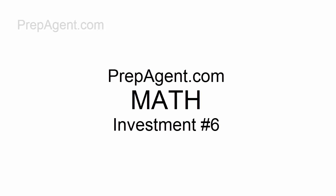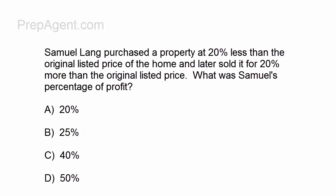Hello again everybody, this is Art at prepagent.com. We're going to continue with more math — everyone's favorite subject. This time we have a sixth investment question for you to solve: Samuel Lang purchased a property at 20% less than the original listed price of the home, and later sold it for 20% more than the original listed price.